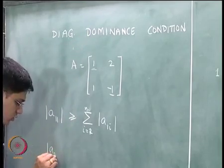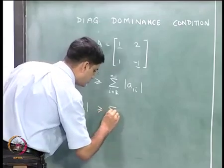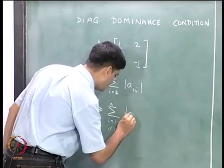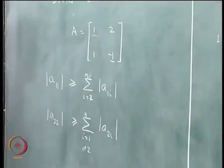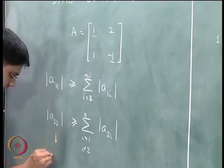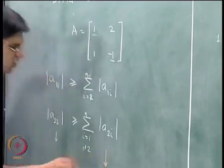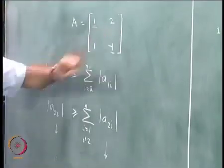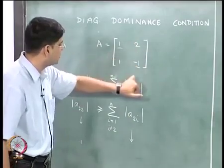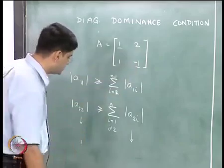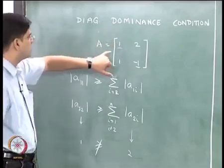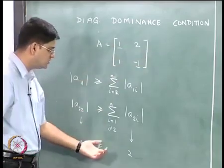Also, A22 must be greater than or equal to the summation over i=1 to n (i not equal to 2) of |A2i|. In this case, the absolute value of A22 is 1, but the sum of the absolute values of the other elements in that column is actually equal to 2, so this condition is not met. Therefore, the diagonal dominance condition is not satisfied for matrix A.